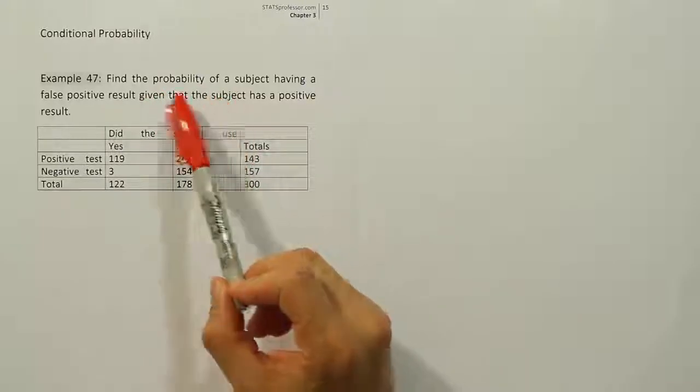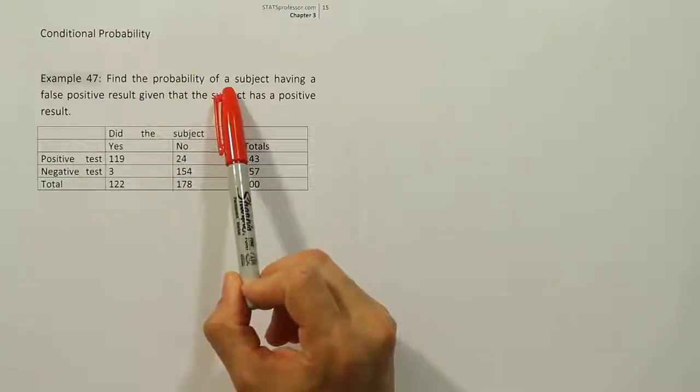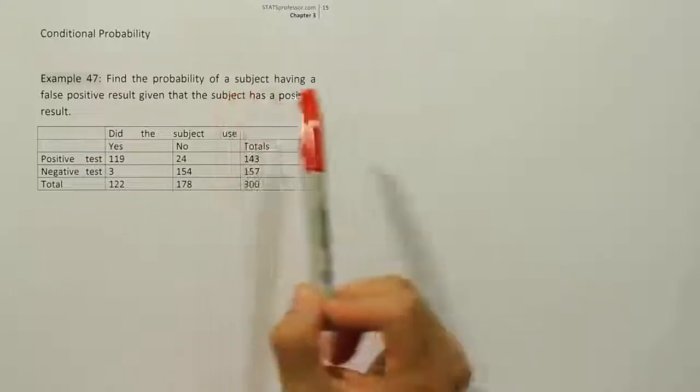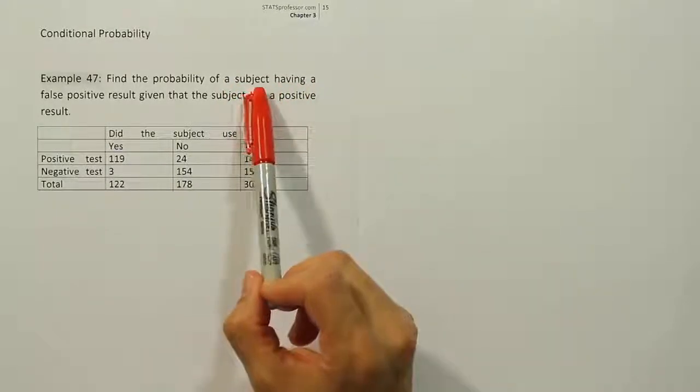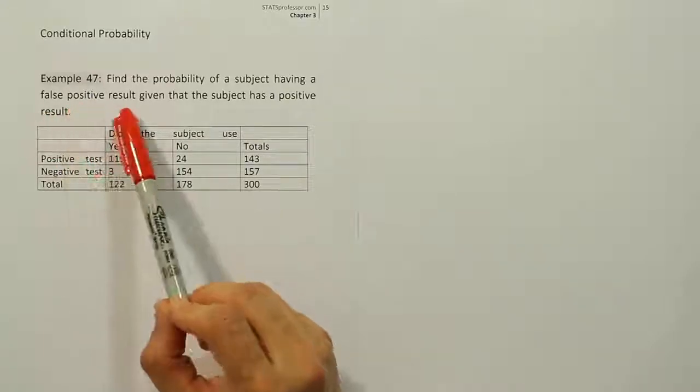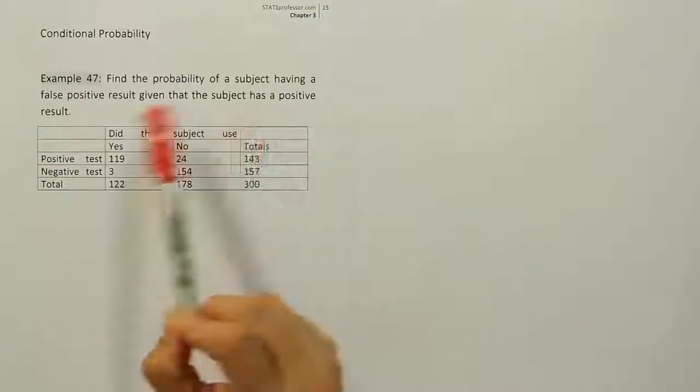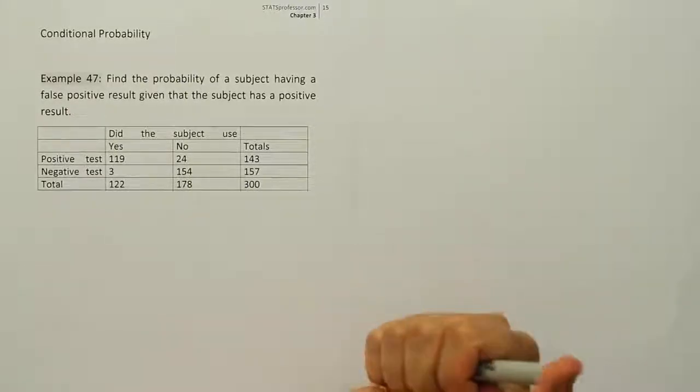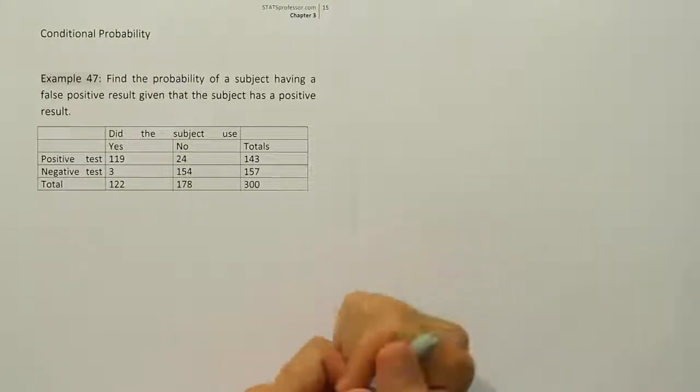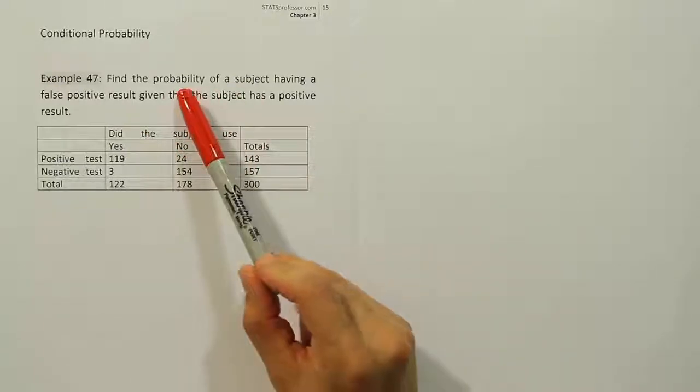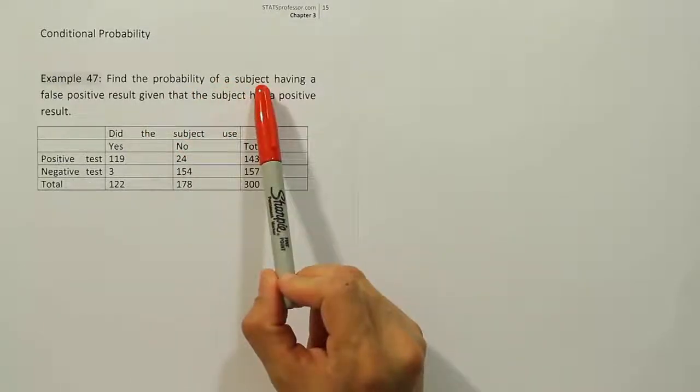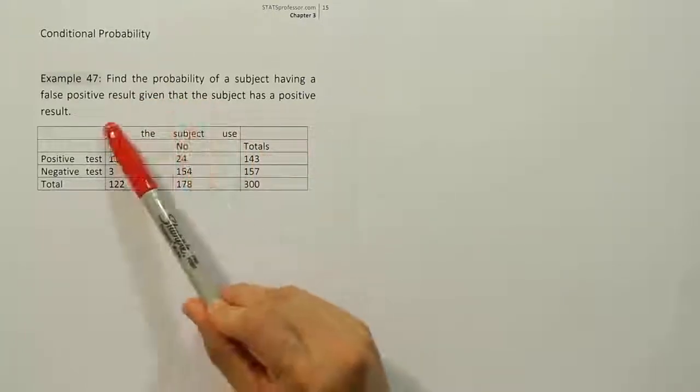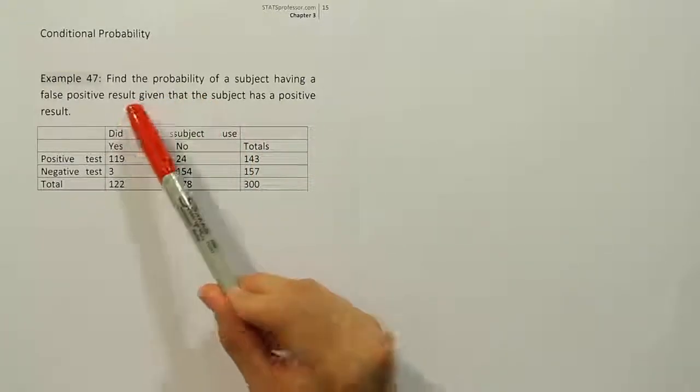Now the problem itself is asking us to find a probability. And they're only selecting one subject from the sample of 300 subjects, so that's important. But then they're going on to tell us that we want to find the probability of a person having a false positive result given that the subject has a positive result. So the wording here is indicating that this is a conditional probability problem.